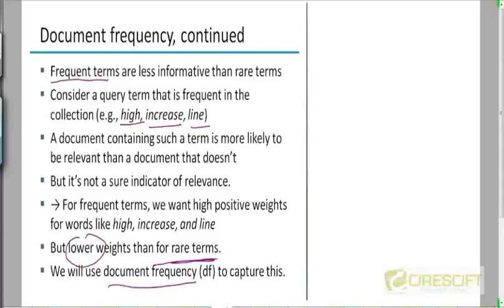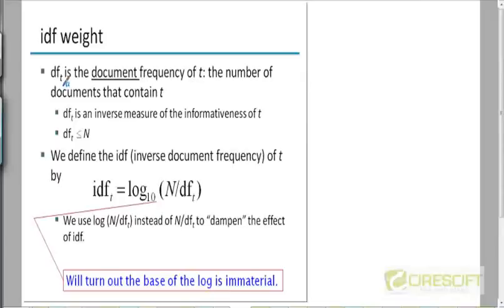I'll give you an example later to show this. Document frequency is the number of documents that contain the term, which is the length of the postings list for that term in the non-positional index. The document frequency is always less than or equal to the total number of documents in the corpus. Importantly, document frequency is an inverse measure of the informativeness of T — if a term T is informative, it's rare, and its document frequency will be low, while a very frequent, uninformative term will have a high document frequency.